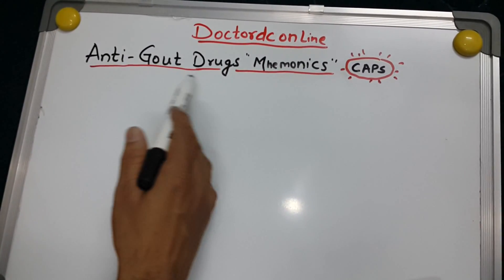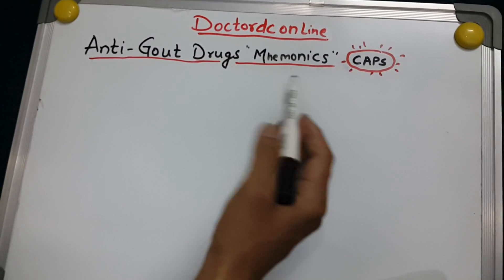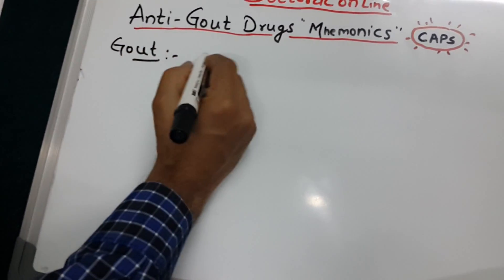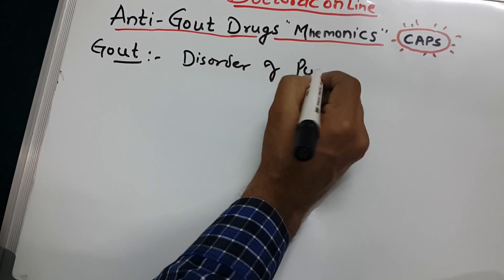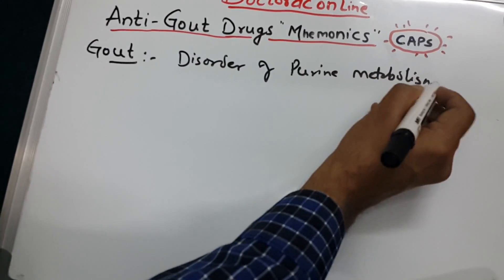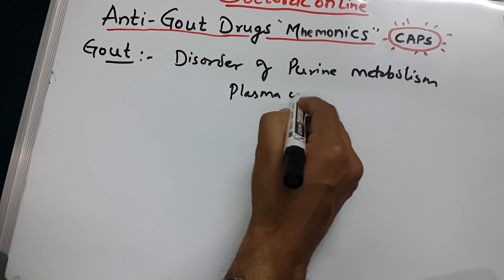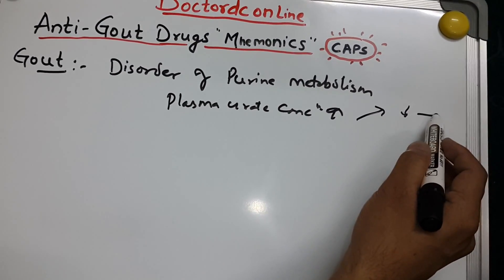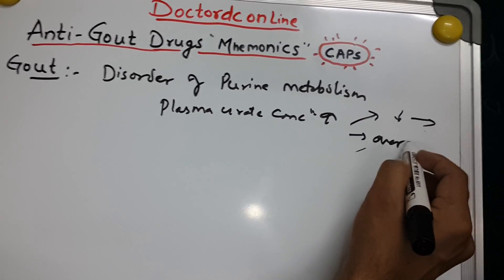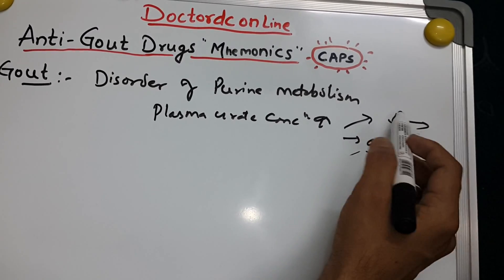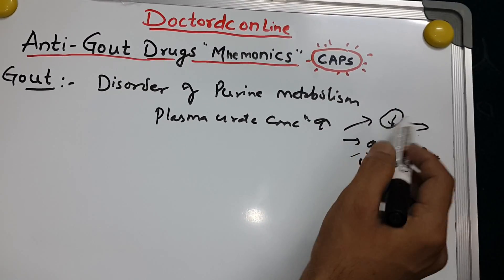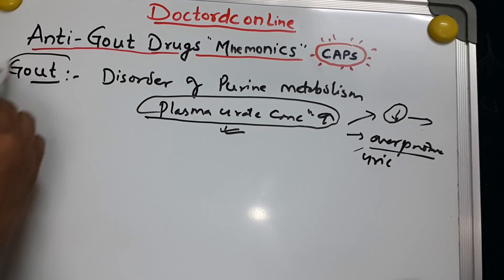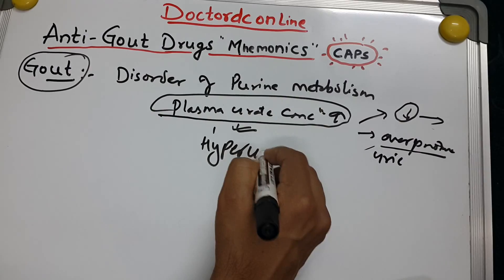Today we are talking about anti-gout drugs, and I've made mnemonics which may be useful for you. Before we start, what is gout? Gout is a disorder of purine metabolism in which the plasma urate concentration is high — maybe due to decreased excretion or overproduction of uric acid. That's why the plasma urate concentration level is high, which is also called hyperuricemia.